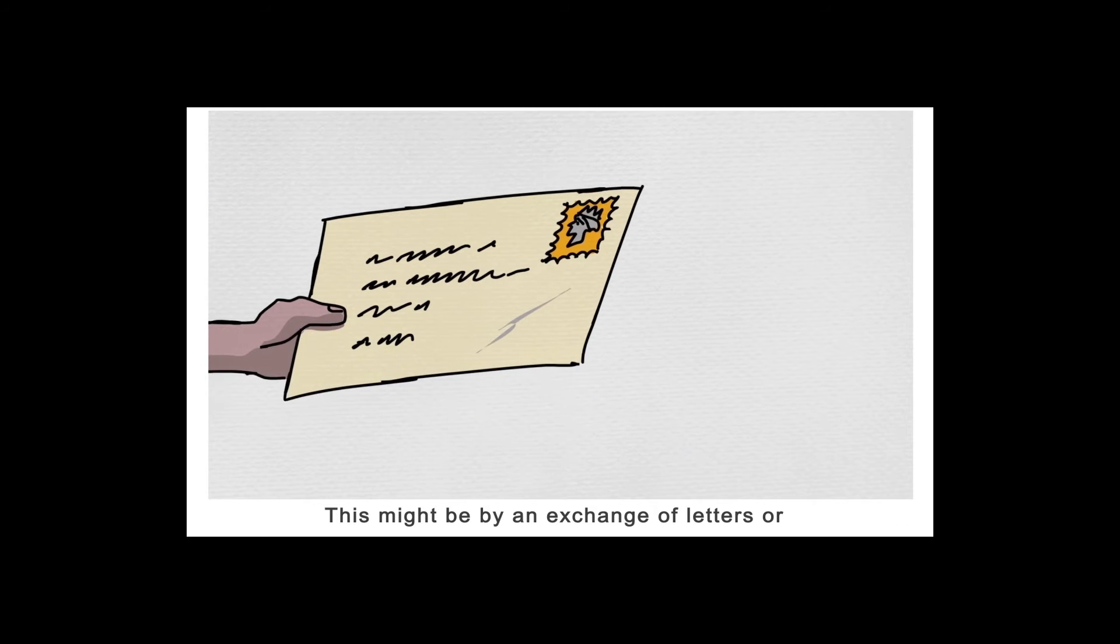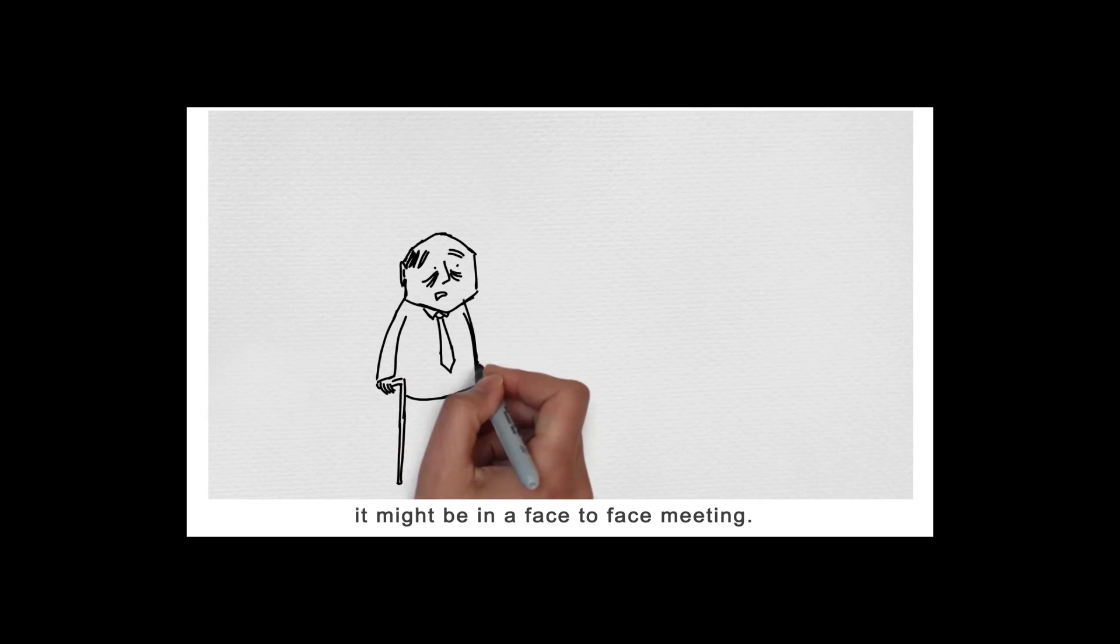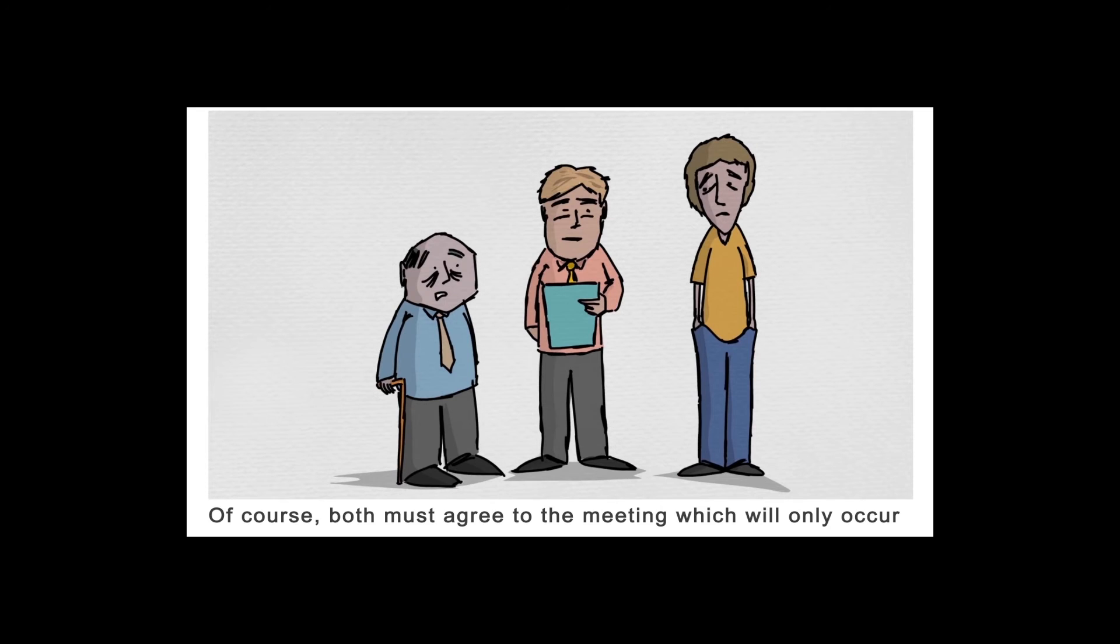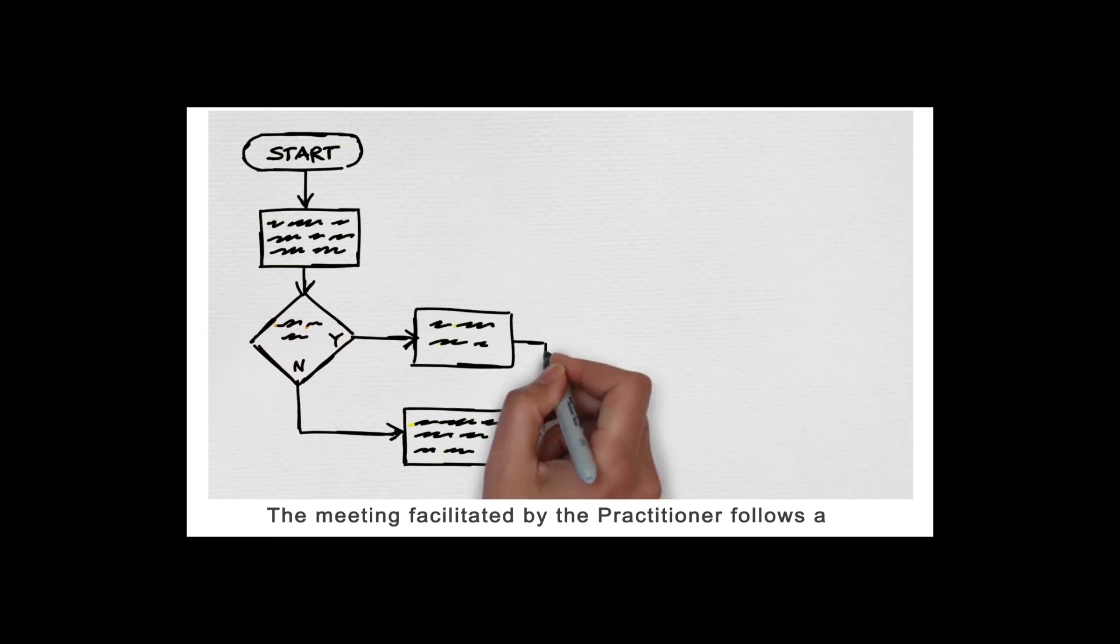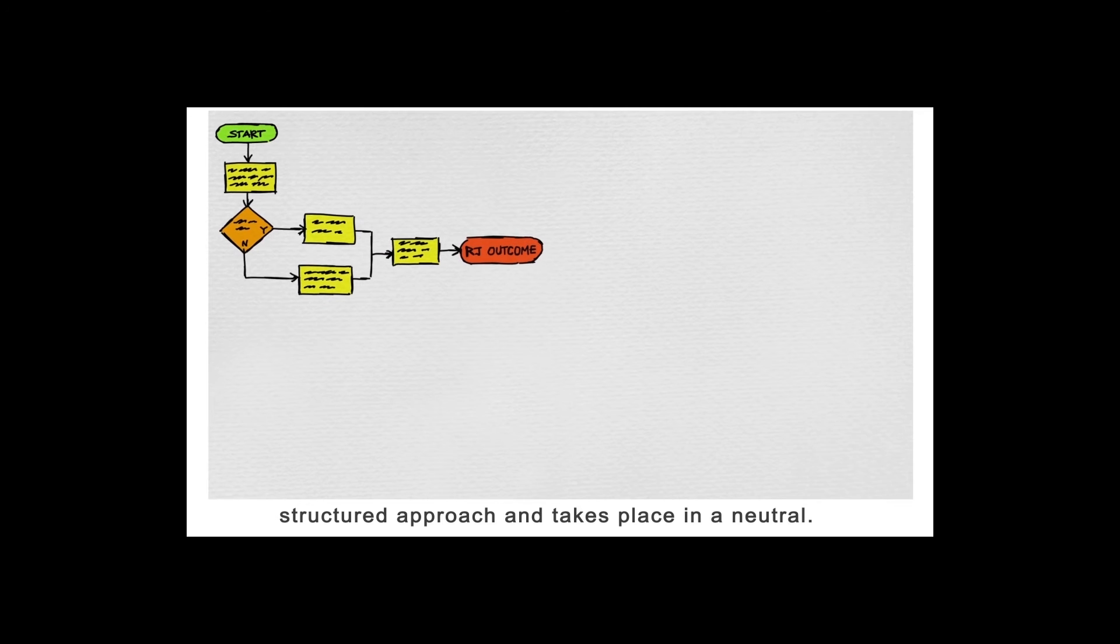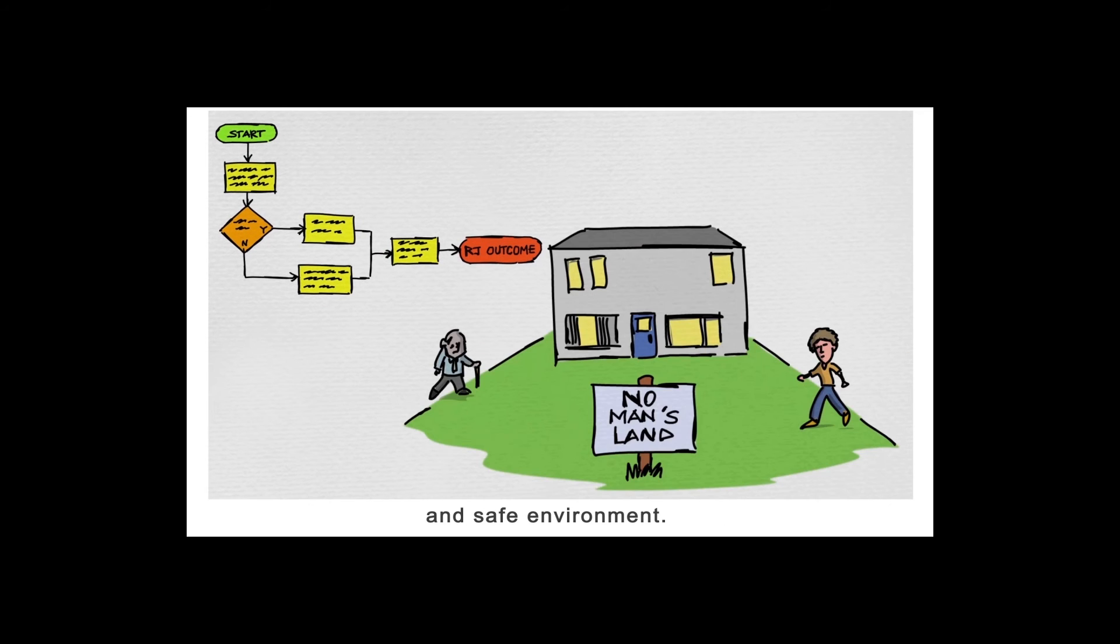This might be by an exchange of letters, or it might be in a face-to-face meeting. Of course, both must agree to the meeting, which will only occur following careful preparation and risk assessments by a trained restorative justice practitioner. The meeting, facilitated by the practitioner, follows a structured approach and takes place in a neutral and safe environment.